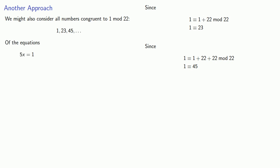Another approach to solving this congruence is as follows. We might also consider all numbers that are congruent to 1 mod 22. So since 1 is congruent to 1 plus 22 mod 22, then 1 is congruent to 23. Since 1 is congruent to 1 plus 22 plus 22, then 1 is also congruent to 45, and so on. Now let's consider the equations 5x equals 1, 5x equals 23, 5x equals 45, and so on.